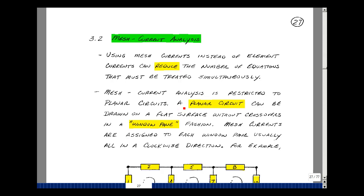Mesh current analysis is restricted to what are called planar circuits. A planar circuit is a circuit that can be drawn on a flat surface without wires crossing over. The resulting schematic may look like a series of window panes. Mesh currents are assigned to each window pane, usually in a clockwise direction.